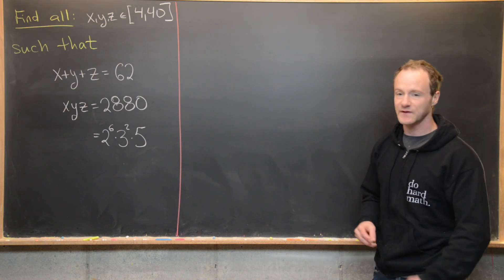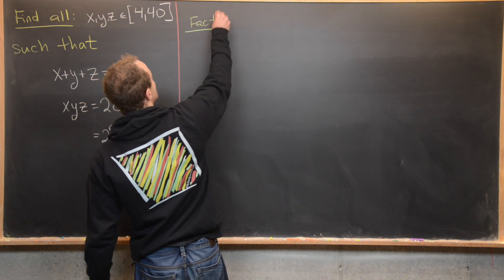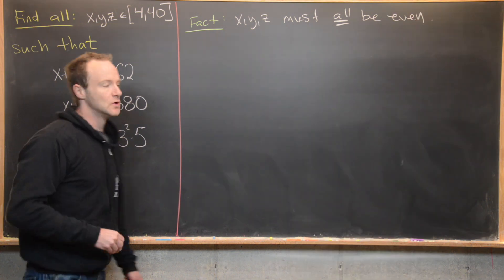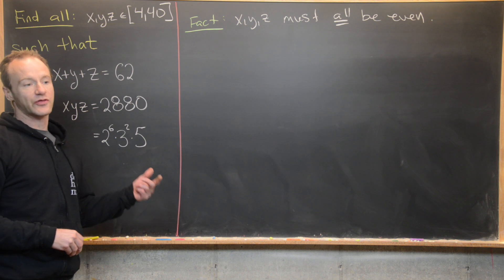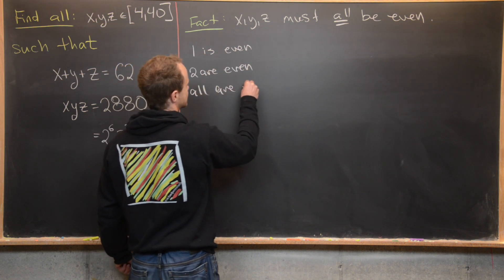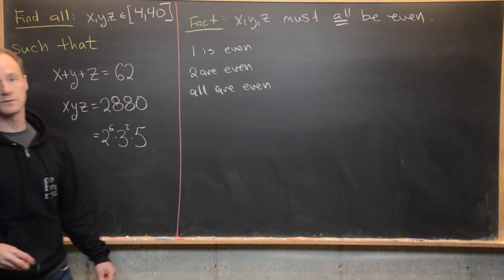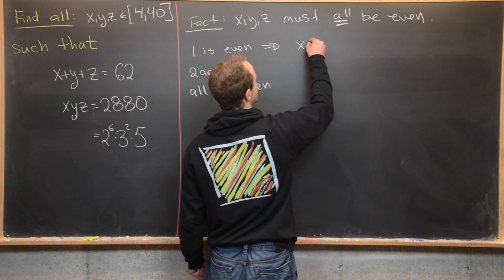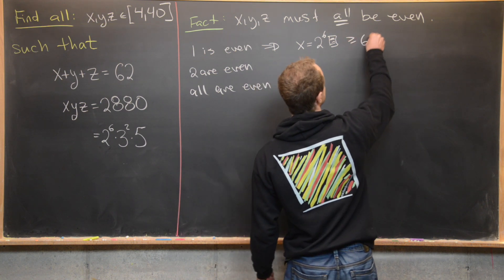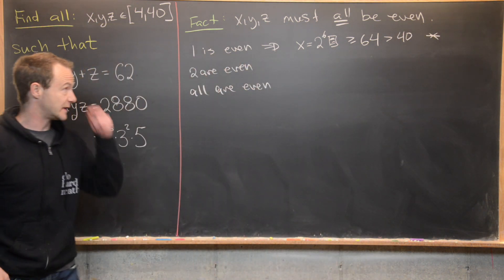Now we're going to make some observations about what must be true regarding x, y, and z. The first fact is that x, y, and z must all be even. The only three possibilities are: 1 is even, 2 are even, or all are even. Notice if 1 is even, it's going to gobble up all of these powers of 2. So say x equals 2 to the 6 times something — but 2 to the 6 is 64, which is bigger than both 62 and 40. So that leads to a contradiction.